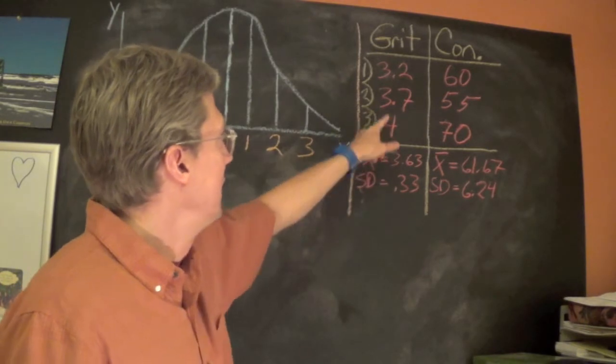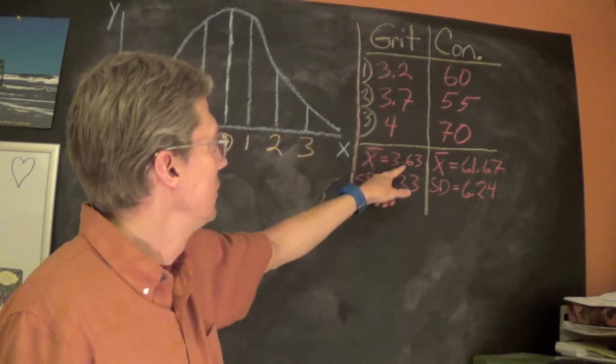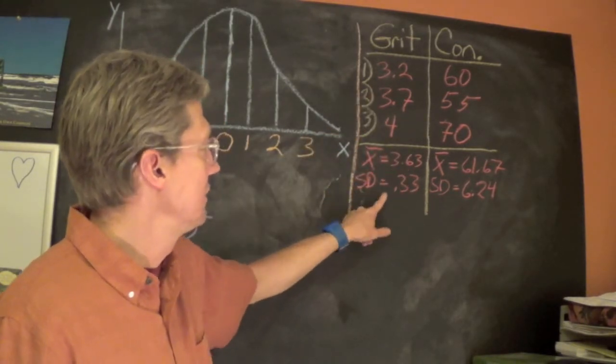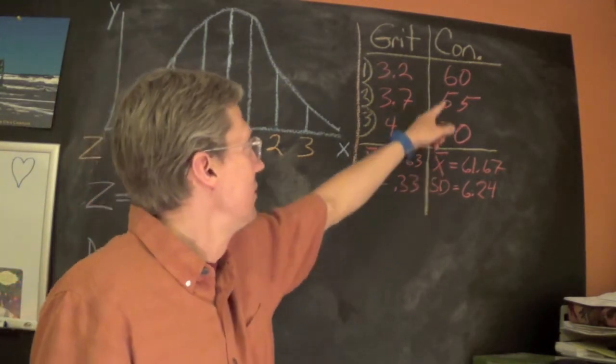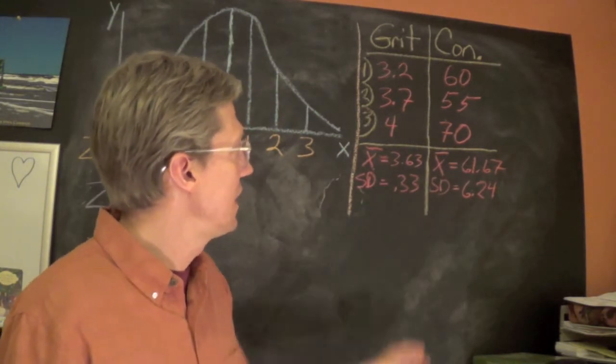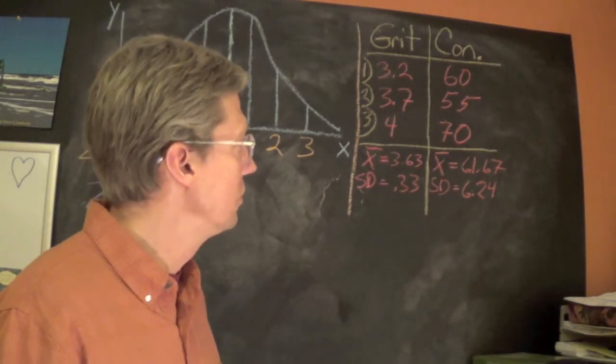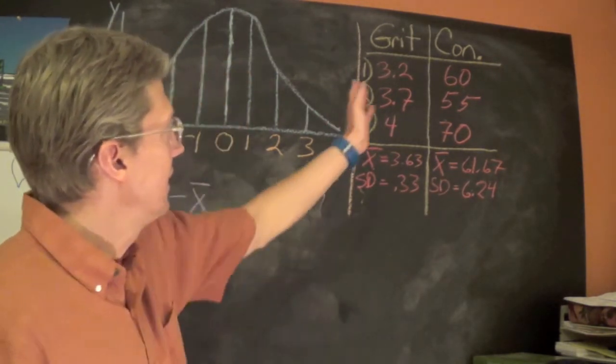To do that, we calculated the mean for these three students, which was 3.63, and then the standard deviation of 0.33. And then for the conscientiousness scale, a mean of 61.67 and a standard deviation of 6.24.